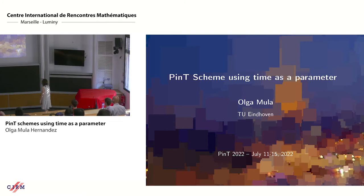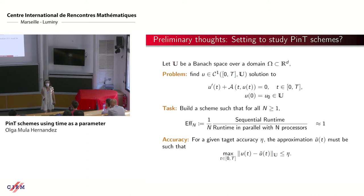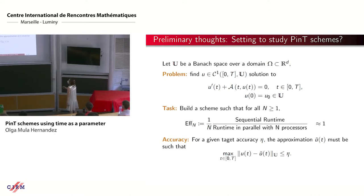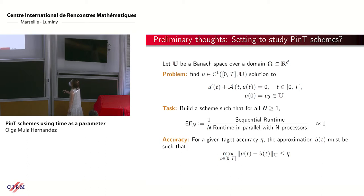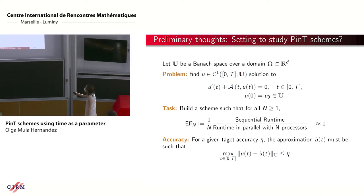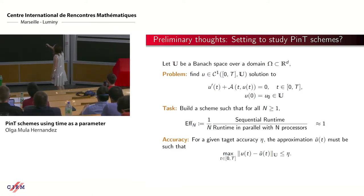Let me introduce the motivations for this title, which sounds a bit mysterious at first sight. I'll start with preliminary thoughts about what is the setting for studying and assessing the quality of a parallel-in-time scheme. I'm going to start by defining an evolution problem. I introduce a Banach space — think about H1 or something like this — and suppose we are searching for a solution u in C1 of [0, T].